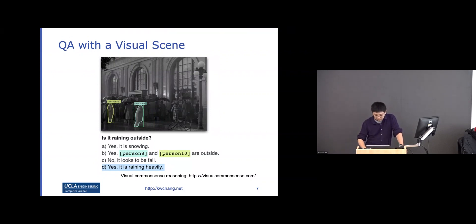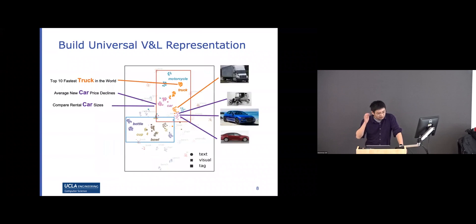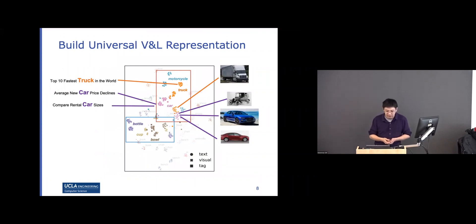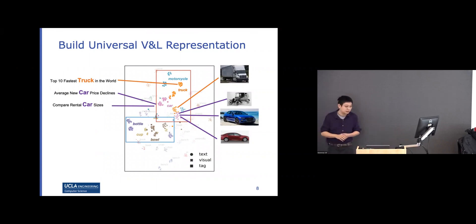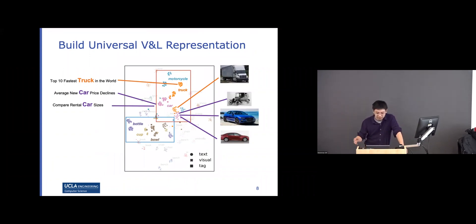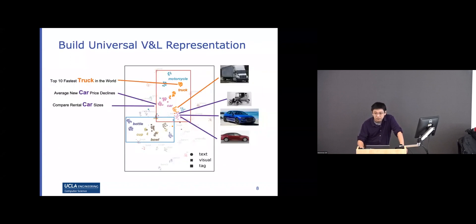All these examples call for a way to learn the mapping between vision and language — to put these two different modalities in the same space. That gives us hope to use the rich semantics in language data to solve vision problems. The picture shows image embeddings and text embeddings mapped into the same representation space.